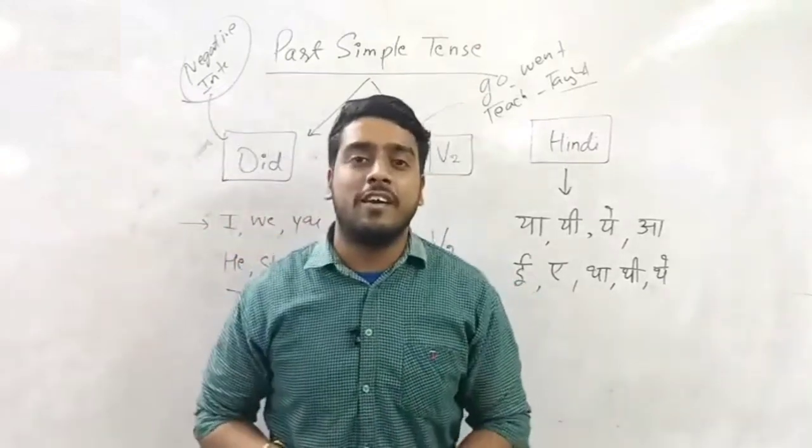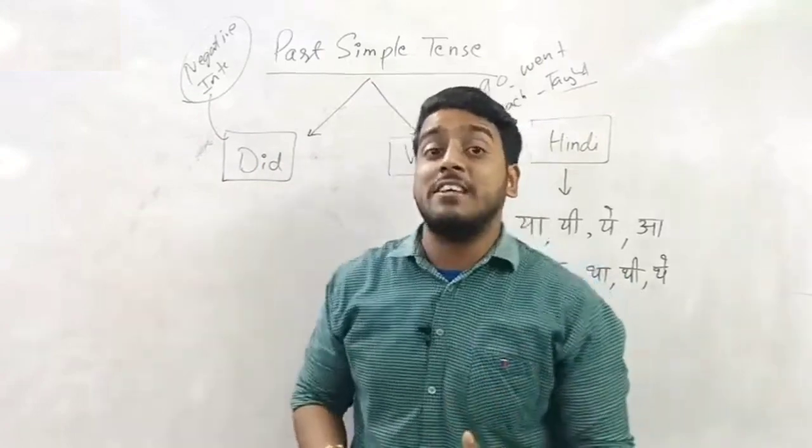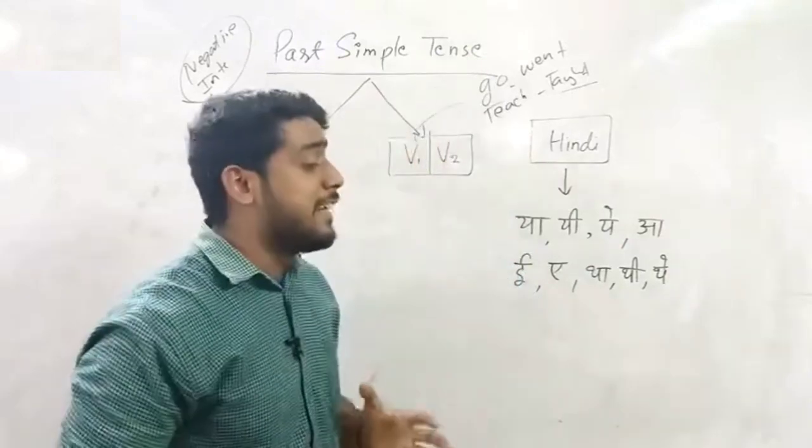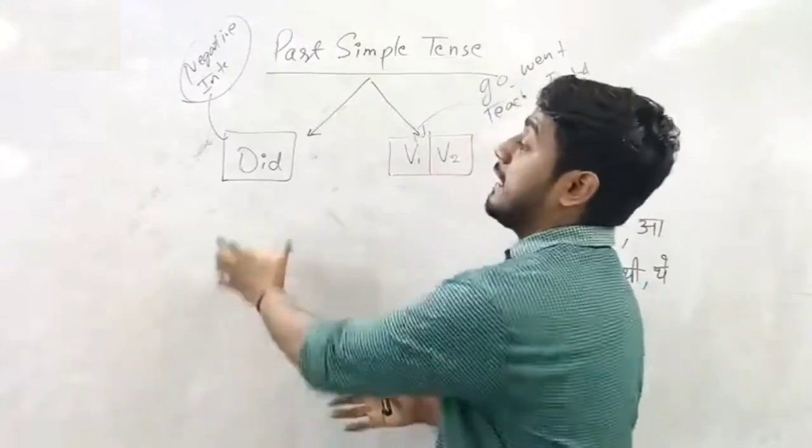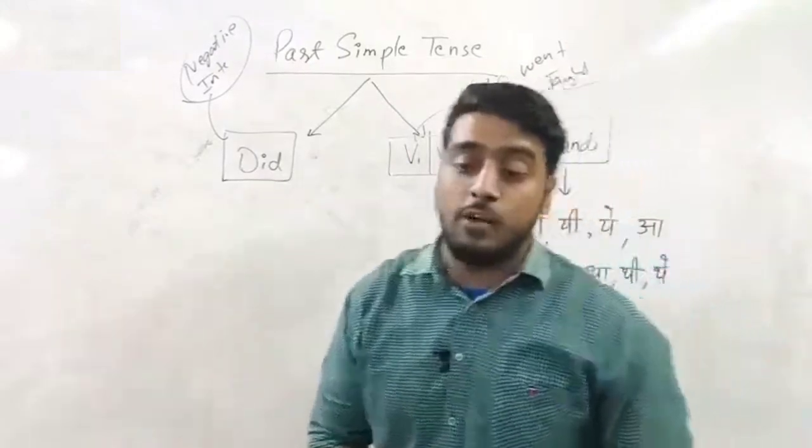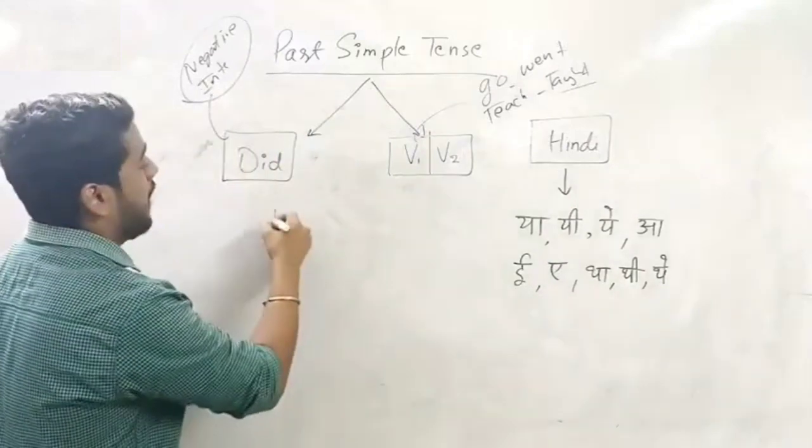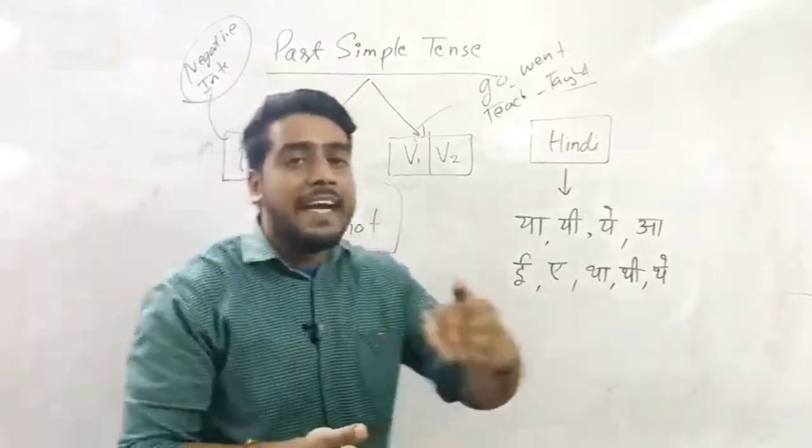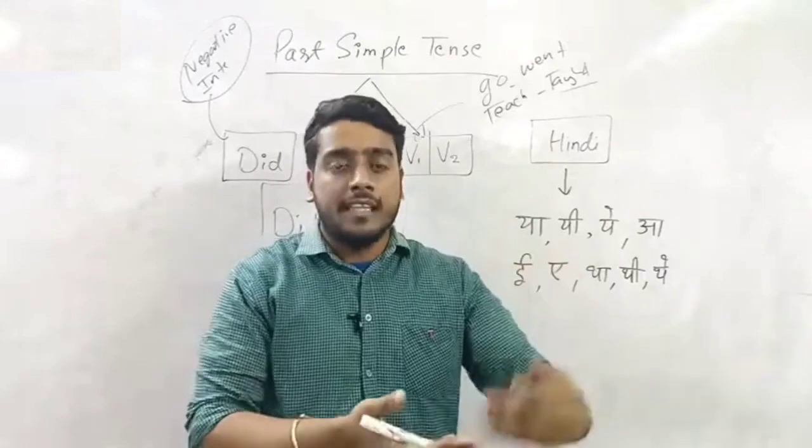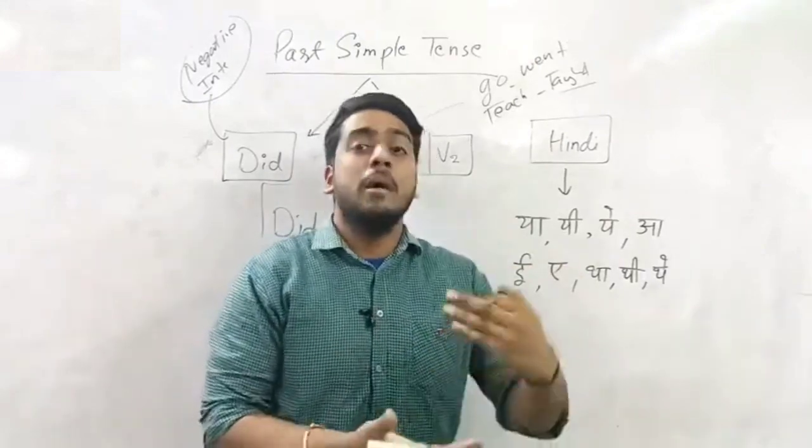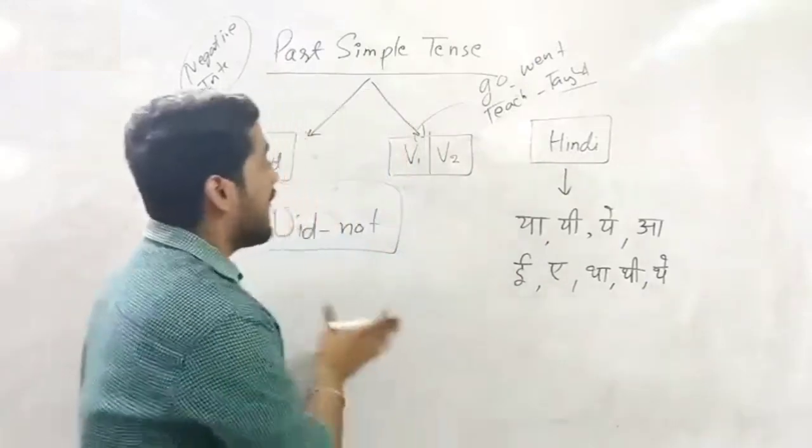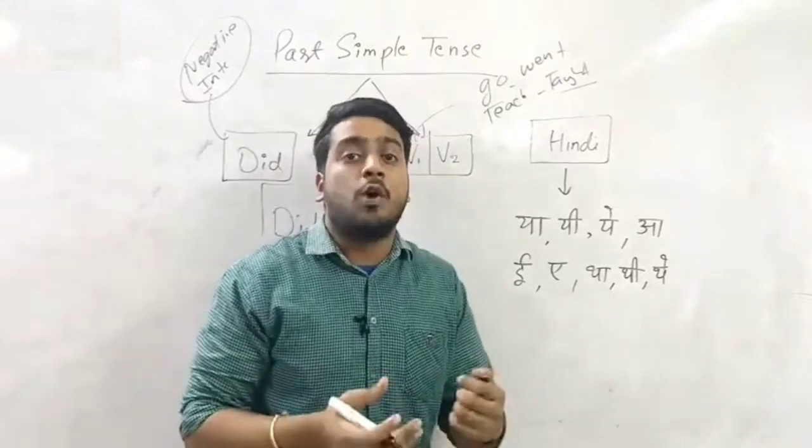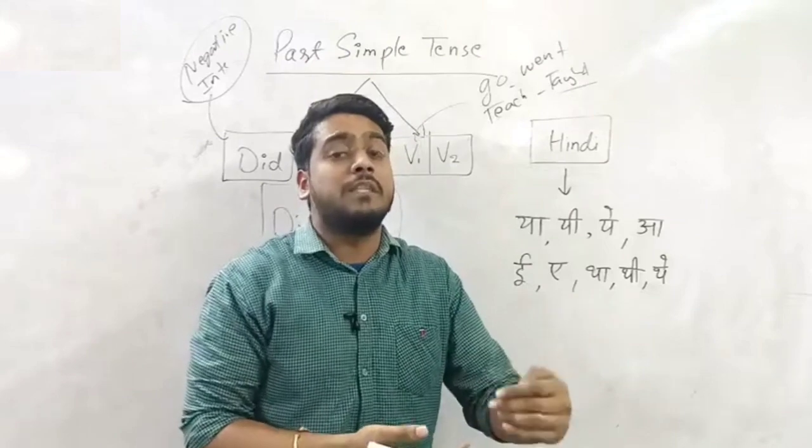And now we are going to learn how to make negative sentences. Let's learn how to make negative sentences of past indefinite tense, or we can call that past simple tense. I told you that when we talk about negative sentences, when we talk about interrogative, we have to call that thing which is did. Here you will use did. And to make did negative, we will add what after it? Not, which becomes did not.